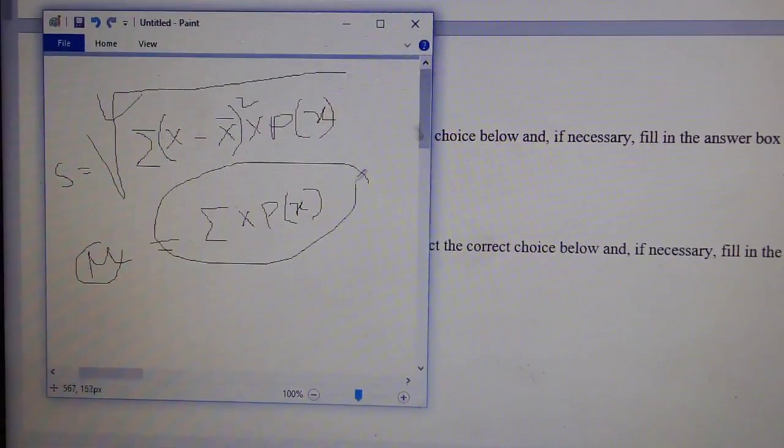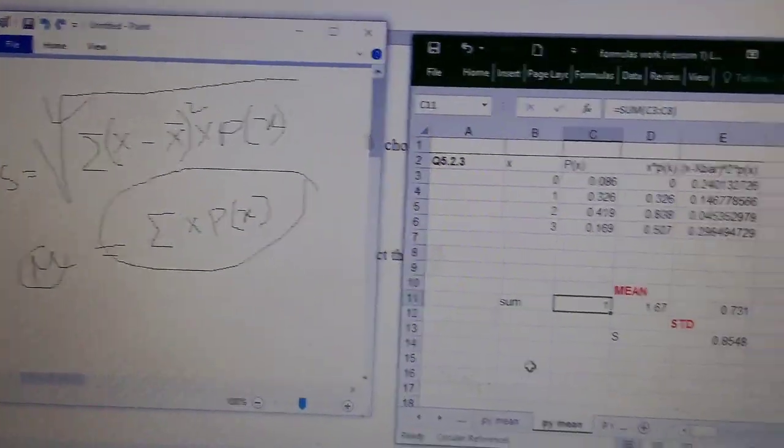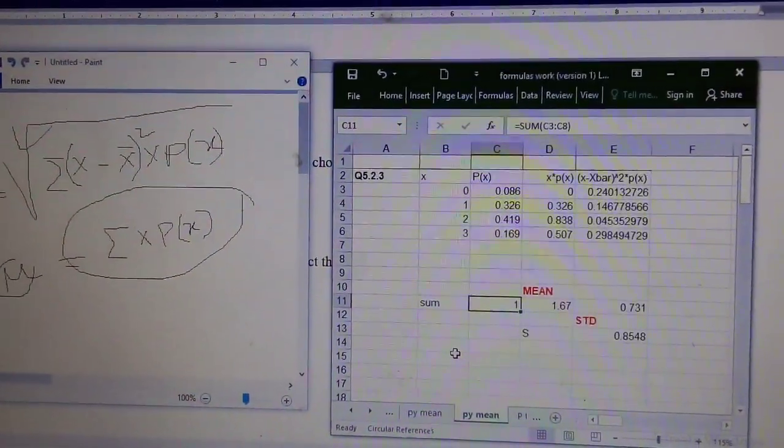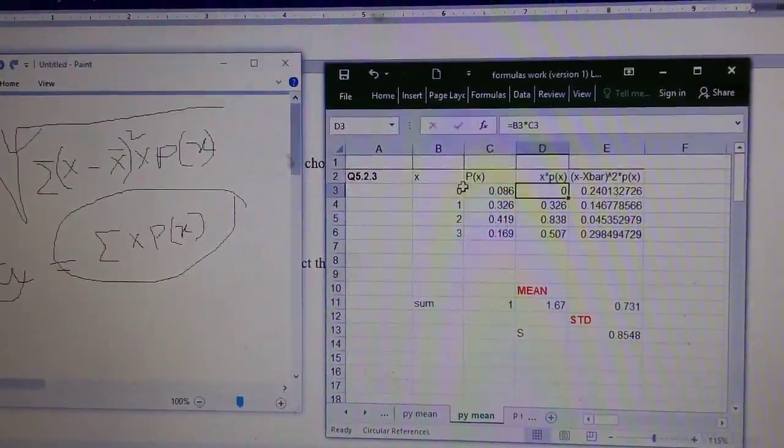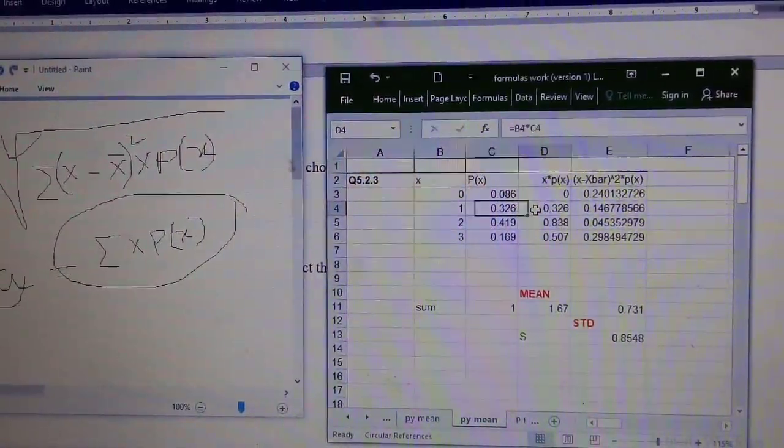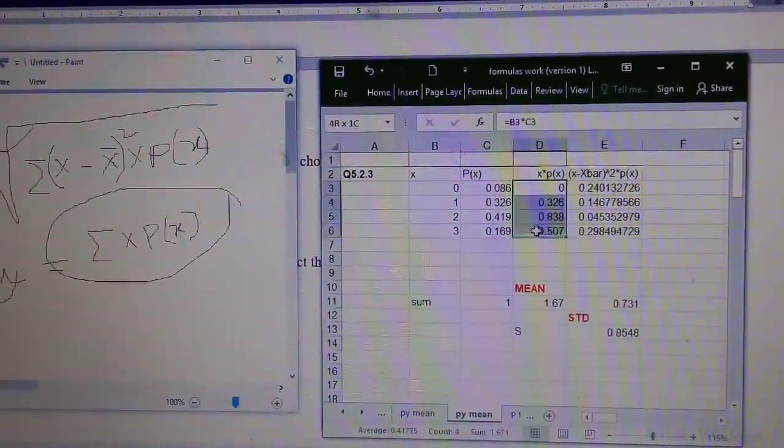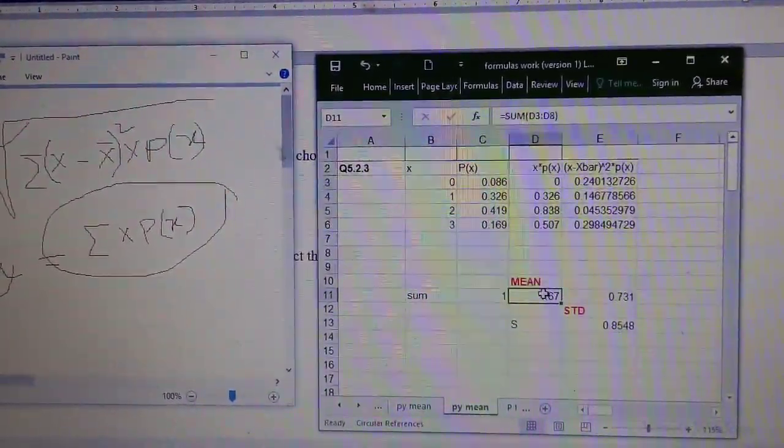So for calculation, we multiply this one by this one to get this, this one by this one to get this, multiply this one to get this. So the sum of these equals the mean 1.67.